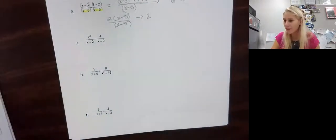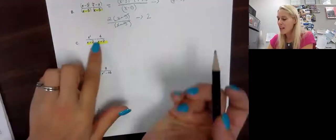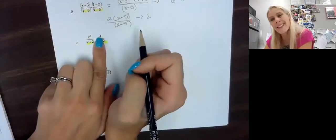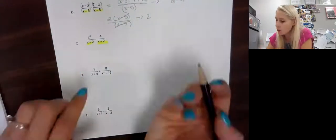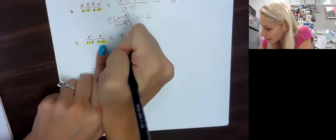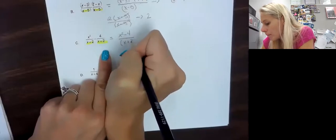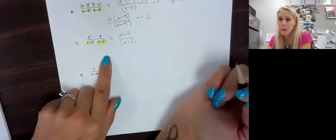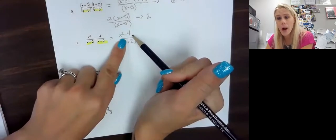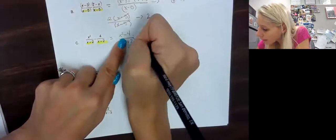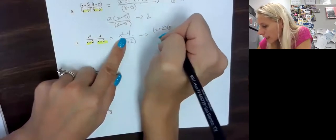Next one — luckily we still have a common denominator, we don't have to work yet. Because this is subtraction we want to watch out, but since this is a number and not a binomial, we don't need parentheses around it. We have x squared minus 4 on top over that common denominator. We know that x squared minus 4 is a difference of squares, so I'm going to factor that to x plus 2 times x minus 2.